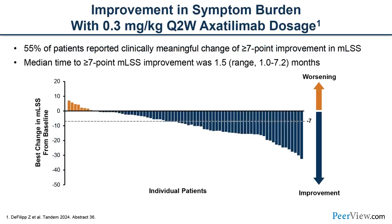Improvement in symptom burden was measured by the Lee Symptom Scale. Fifty-five percent of participants experienced a clinically meaningful improvement in symptoms. The median time to improvement was one and a half months, which was also the median time to clinical response — suggesting that when patients achieved a clinical response, they also often felt that they were getting better, which is obviously very important.